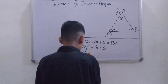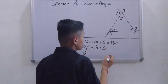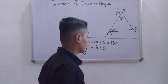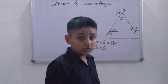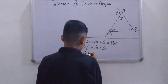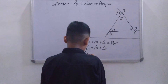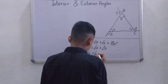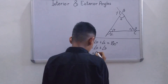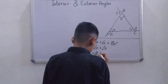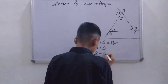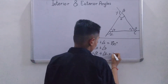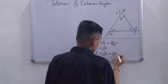So Angle X is equal to Angle A plus Angle B. And our third property is the sum of all the exterior angles is equal to 360 degrees — meaning Angle X plus Angle Y plus Angle Z is equal to 360 degrees.